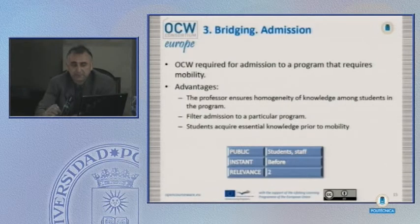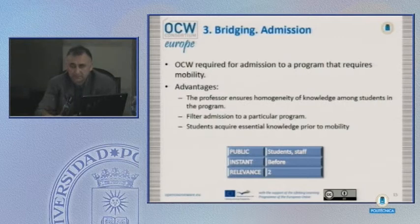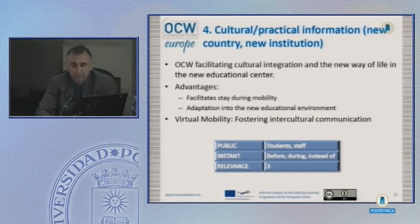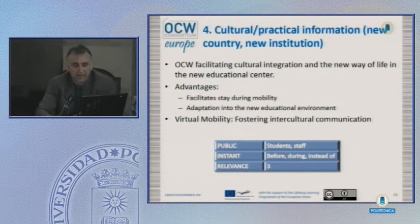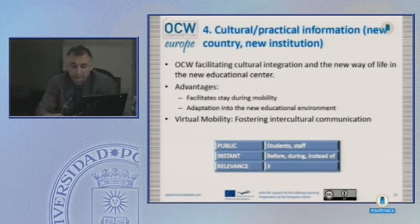The third scenario is bridging. Open courseware supports students meeting admission requirements for a program that requires mobility. The advantage is that the professor ensures homogeneity of knowledge among students in the program, while students acquire essential knowledge prior to mobility. Another scenario is cultural and practical information — open courseware facilitates cultural integration and a new way of life. These general scenario definitions will be better understood through the examples that follow.